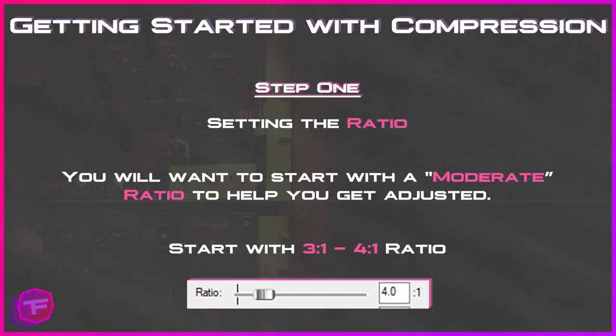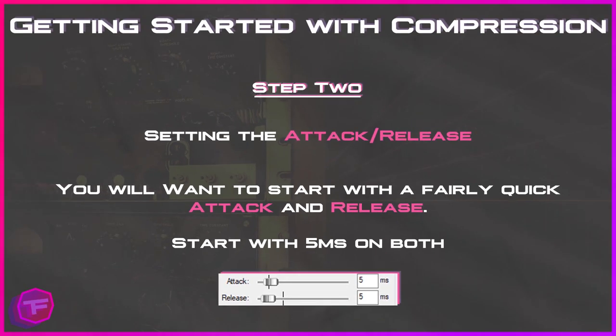Now we're ready to begin with the steps for setting up your own compression filter. I've laid out a step-by-step guide that will help you make sense of compression and point you in the right direction. Step one: setting the ratio. You will want to start with a moderate ratio — I suggest starting with a ratio anywhere between 3:1 and 4:1. This is generally what's suggested for vocals.